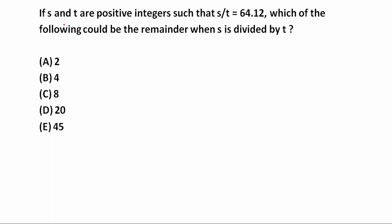If S and T are positive integers such that S over T is equal to 64.12, which of the following could be the remainder when S is divided by T?